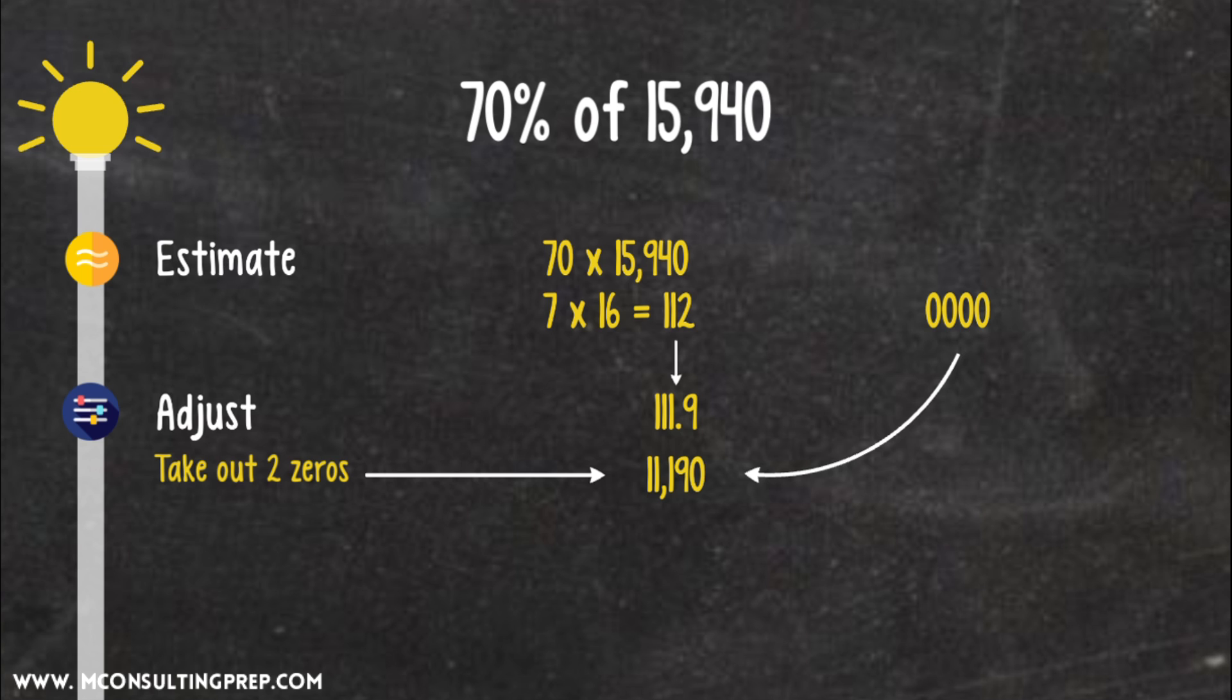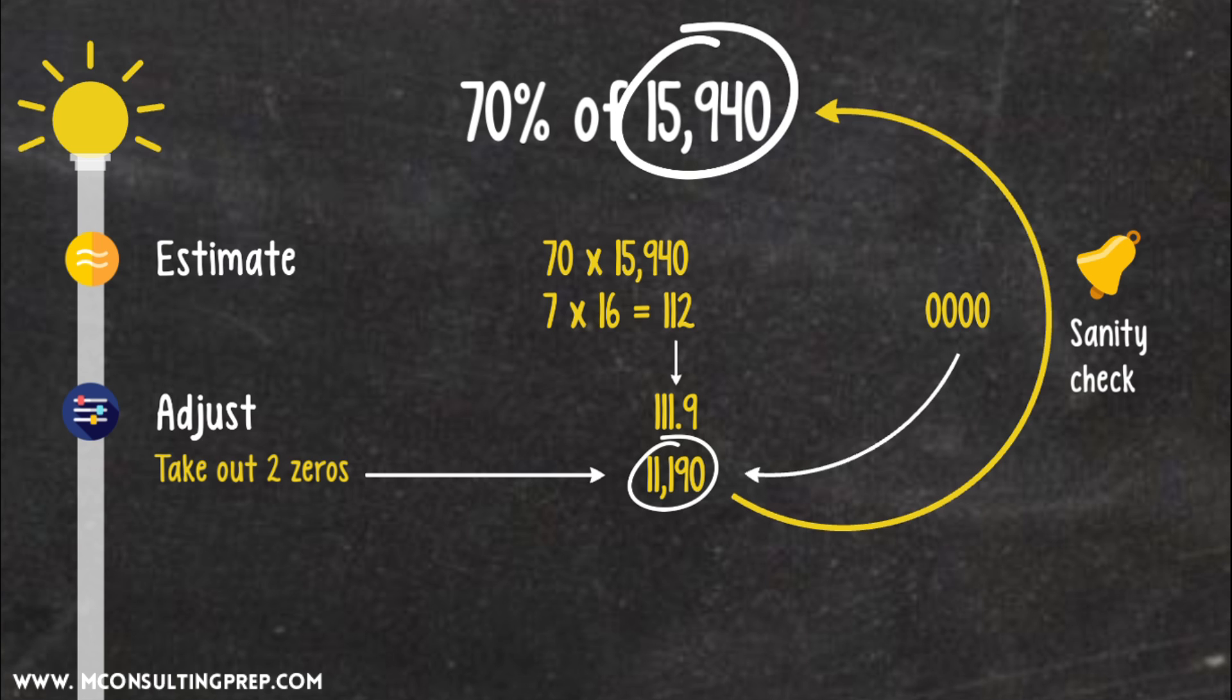Sometimes working with that many zeros can be complicated and you'll make mistakes. So, I have this simple trick, to do a sanity check with the original number. With percentage calculations, the final answer has to be sizable compared to the original number. In this case, 11,000 is sizable compared to 15,000. If my calculation shows 110,000, my safety bell should definitely be ringing. The correct answer is 11,158.